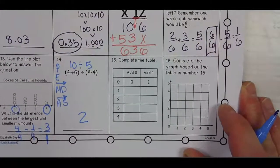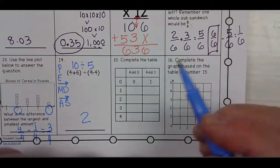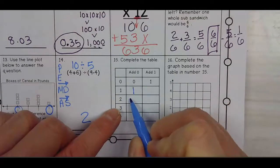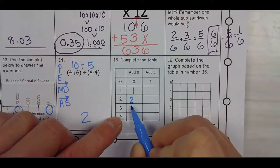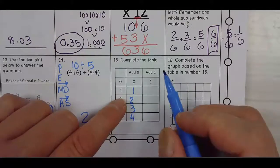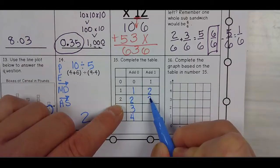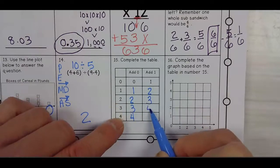Complete the table. Blurt. 1 plus 0 is 1. 2 plus 0? 2. 3 plus 0? 3. 4 plus 0? 4. Adding 1. 1 plus 1 is 2. 3. 3. 3. 4. 5.